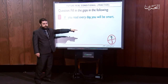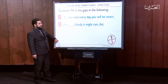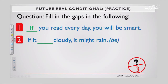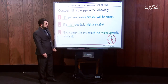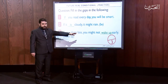If you're correct, give yourself a mark. Number 2: 'If it [be] cloudy, it might rain.' You have to use 'be' in brackets — the answer is 'is.' 'If it is cloudy' is present simple; 'it might rain' is the future. Number 3: 'If you sleep late, you might not [wake up] early.' The answer is 'wake up' — you do not change it; it stays in the base form of the verb. Give yourself a mark of three and let's carry on.